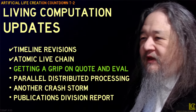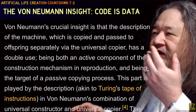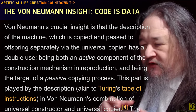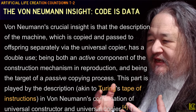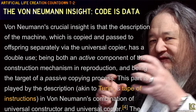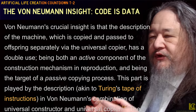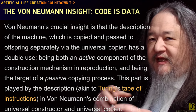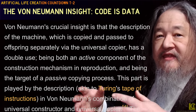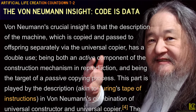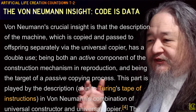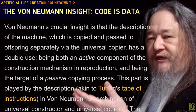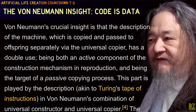Getting a grip on quote and eval. The whole idea that von Neumann's original universal constructor was demonstrating was that in order to make a copy of something, you don't have to have a smaller thing inside it. Instead, you can have a description that gets a double use — it gets interpreted as code, and then it also gets interpreted as data and gets copied. At one point we need to execute the code; in the other case, we need to quote it so that we can talk about it as if it was data.